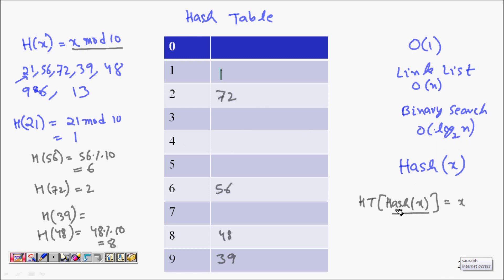So this is the place where we will store. 72 will be stored in HT[2]. Now the thing is, this is so beautiful. Now if I have to search, let's say 72, I will just do, where is H(72)? I will find which is 72 mod 10, so it's 2. I will know that it will be in the cell number 2 of this array.